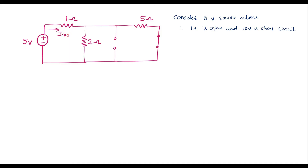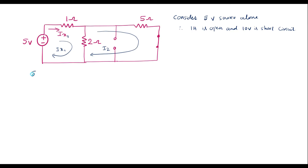I will call the current through the 1 ohm resistor as Ix1. Ix1 indicates the current through the 1 ohm resistor considering the 5 volt source alone. I will simplify this using loop analysis. The current Ix1 is flowing in this loop, and let the current through the other loop be I2. Applying KVL to the first loop: 5 equals 1 times Ix1 plus the voltage across the 2 ohm resistor, which is 2 times (Ix1 minus I2), since both currents flow through the 2 ohm resistor.